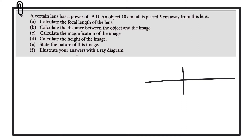From the question we see that the lens has a power of minus 5 diopters, so P is equal to minus 5 diopters. That minus tells us that we have a diverging lens, so the rays are going to spread out as they pass through that lens.